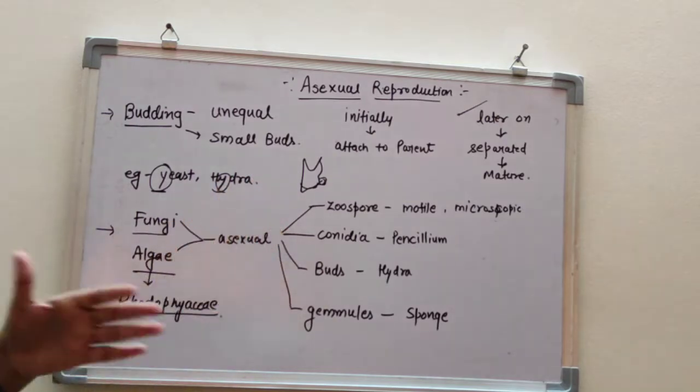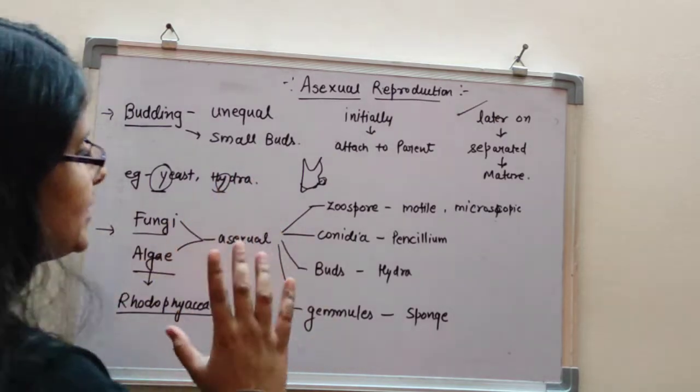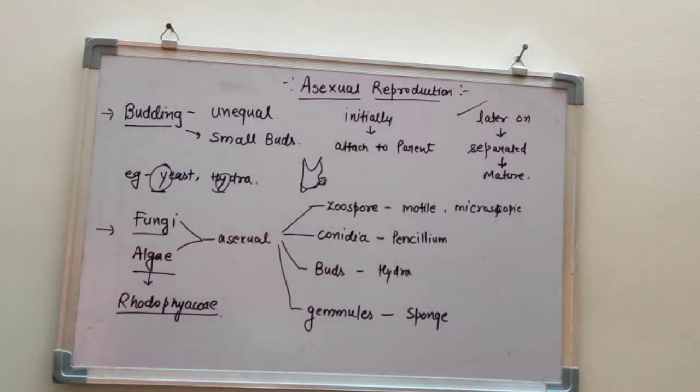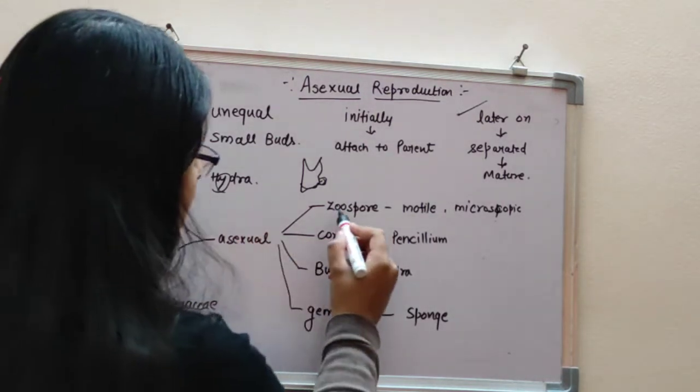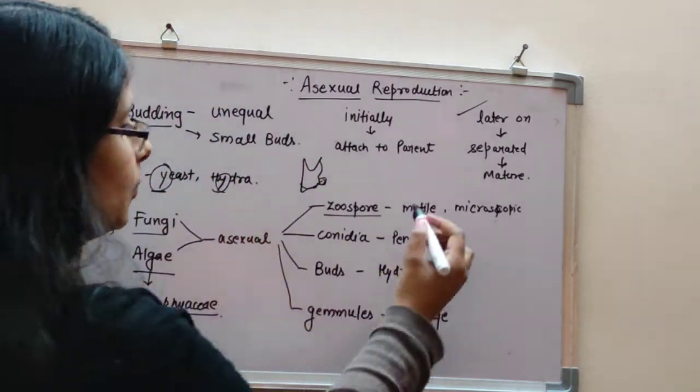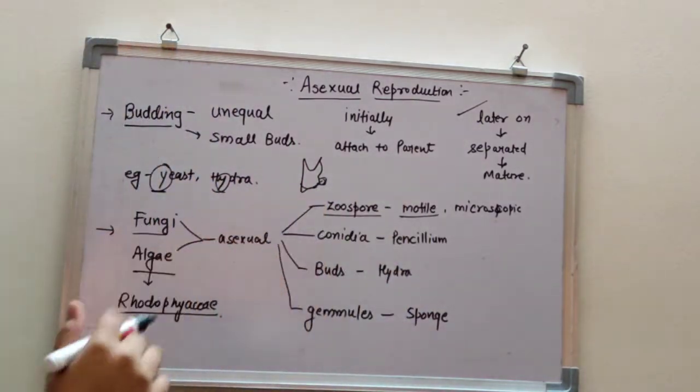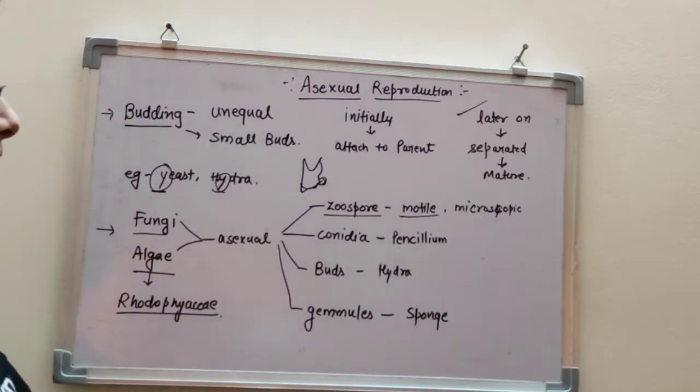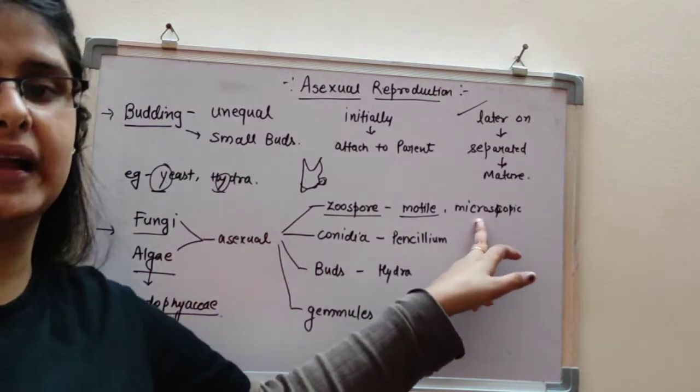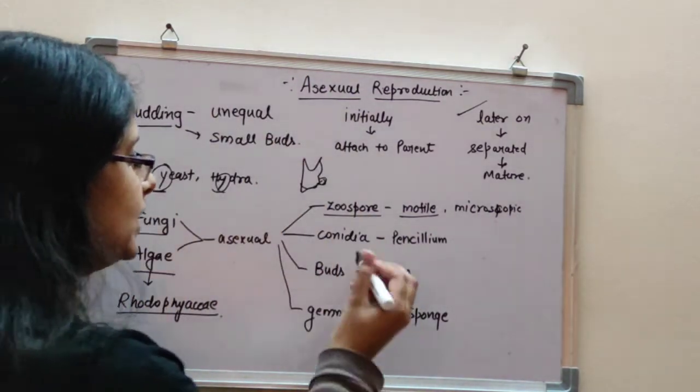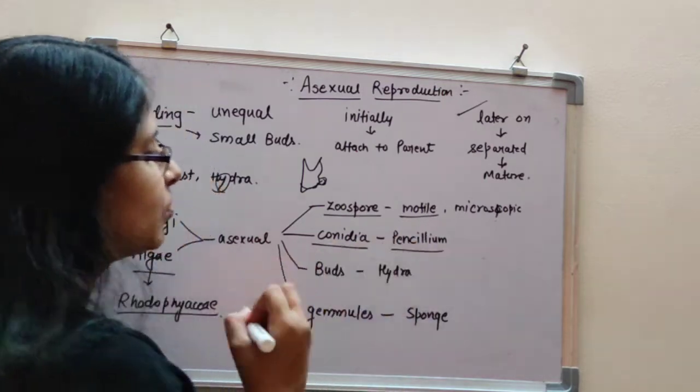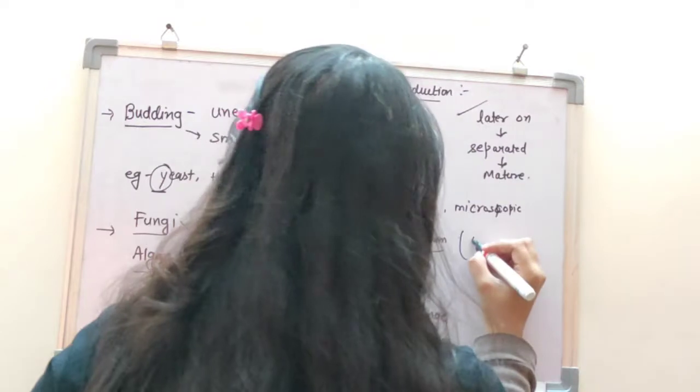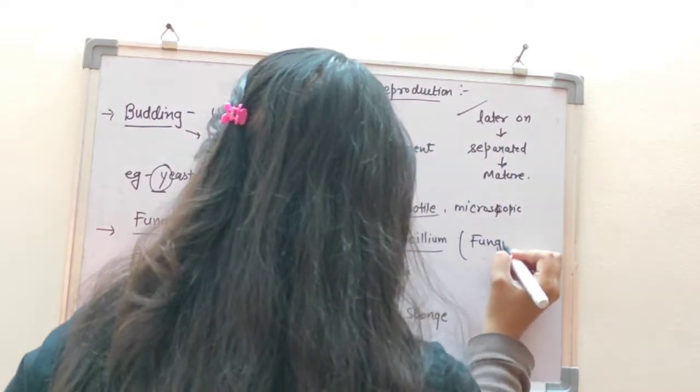Now there are other structures that we need to know their names. These four structures are very important. In asexual reproduction, zoospores are motile and microscopic, they are very small. Conidia are in penicillium, and penicillium is an example of fungi.